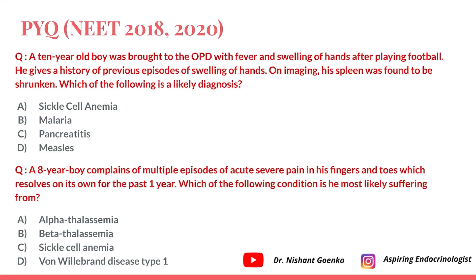Let us first quickly see the questions which came. The first question: a 10-year-old boy was brought to the OPD with fever and swelling of hands after playing football. He gives a history of previous episodes of swelling of hands; on imaging, his spleen was found to be shrunken. The second question: an 8-year-old boy complains of multiple episodes of acute severe pain in his fingers and toes which resolve on their own for the past one year. The answer to both is sickle cell anemia.